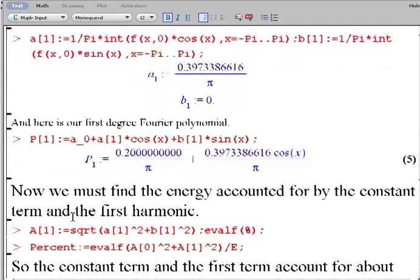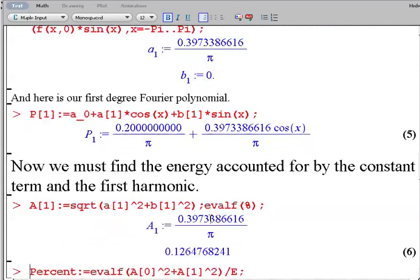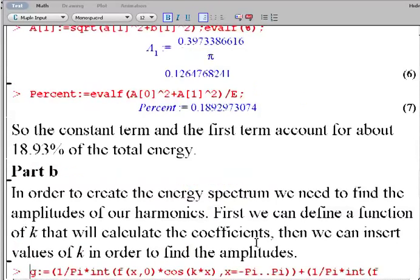And now to find the energy accounted for in the constant term and the first harmonic, I'm going to use the definition of A_1, which is the amplitude: the square root of a_1 squared plus b_1 squared. All right, so there's A_1. Now the percent accounted for—remember that we have to square the amplitudes and find their sums—so it's going to be A_0 squared plus A_1 squared, then divided by the total energy.